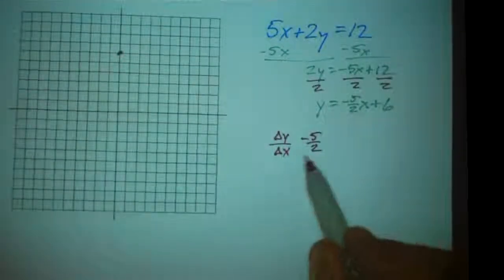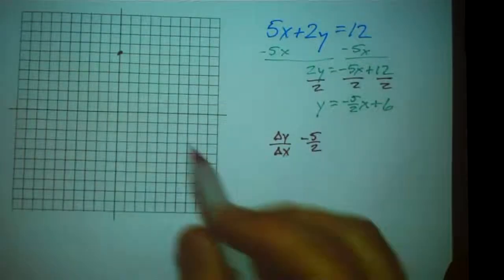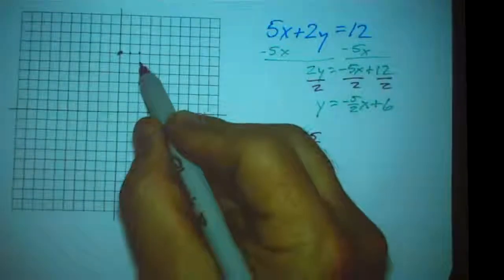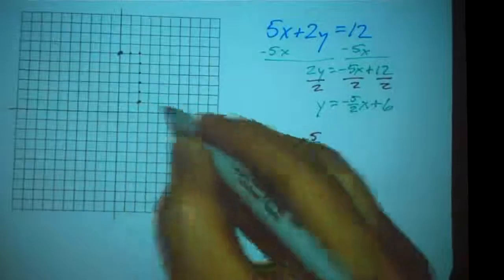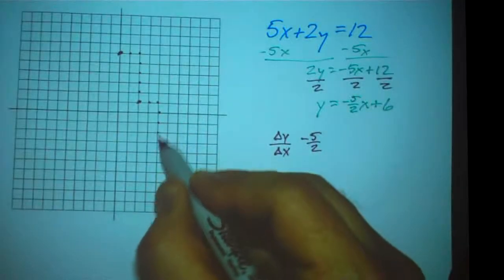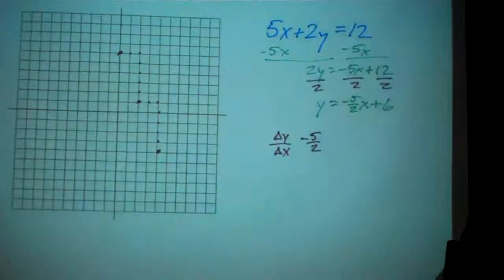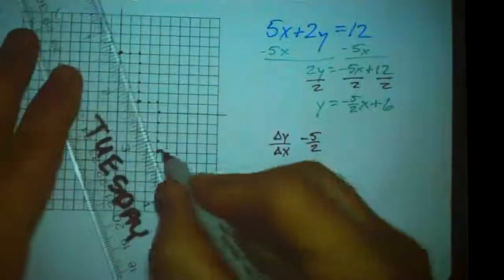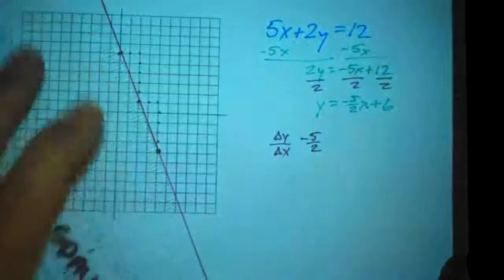And so that means as x increases by 2, y is going to go down by 5. So x increases by 2 and y goes down by 5. 1, 2, 3, 4, 5. x increases by 2, y goes down by 5. 1, 2, 3, 4, 5. And now I can see how this line is going. It's going to go right through these points there.